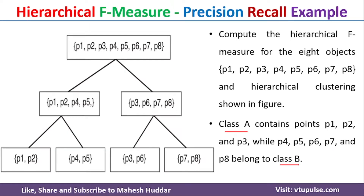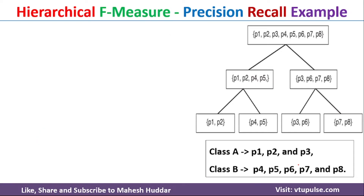Given this particular data, first we need to calculate the precision for each of these particular clusters. Finally, we need to calculate the F-measure for the entire cluster. To calculate the F-measure, we need to know two things: one is recall and the second one is precision.